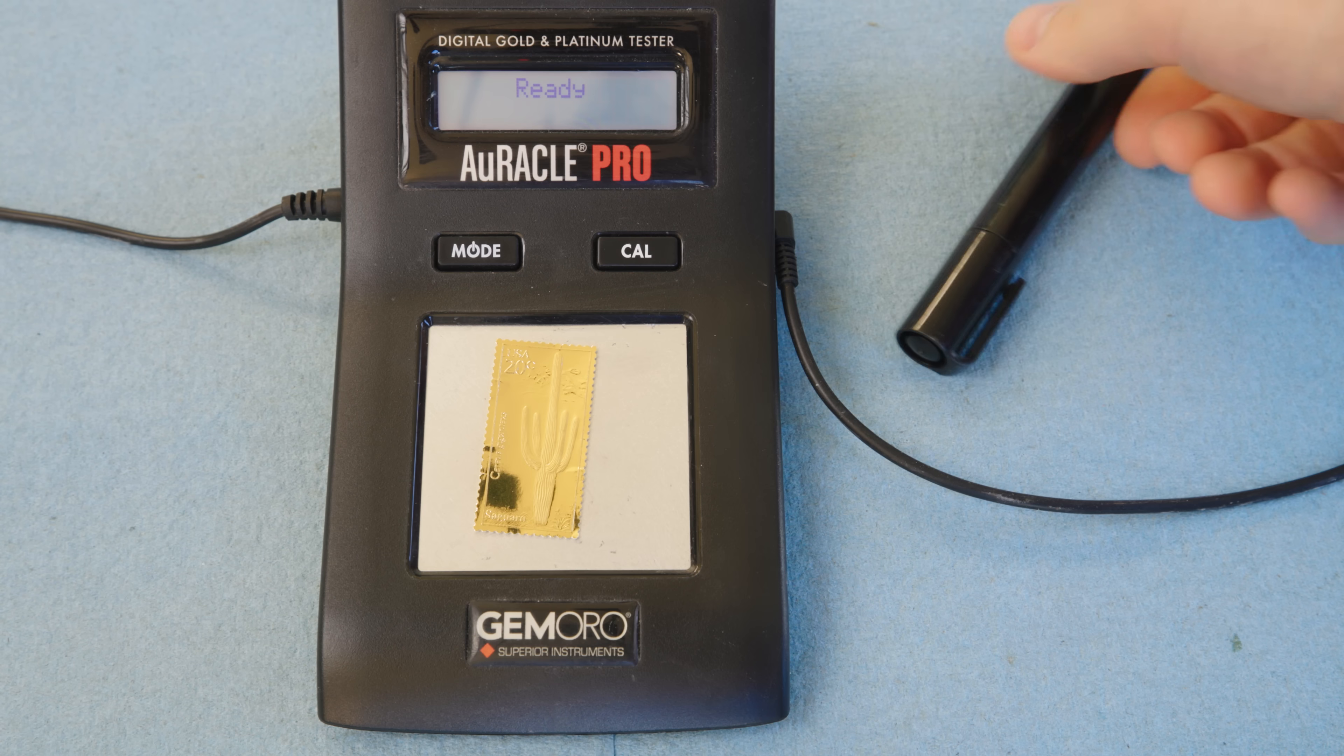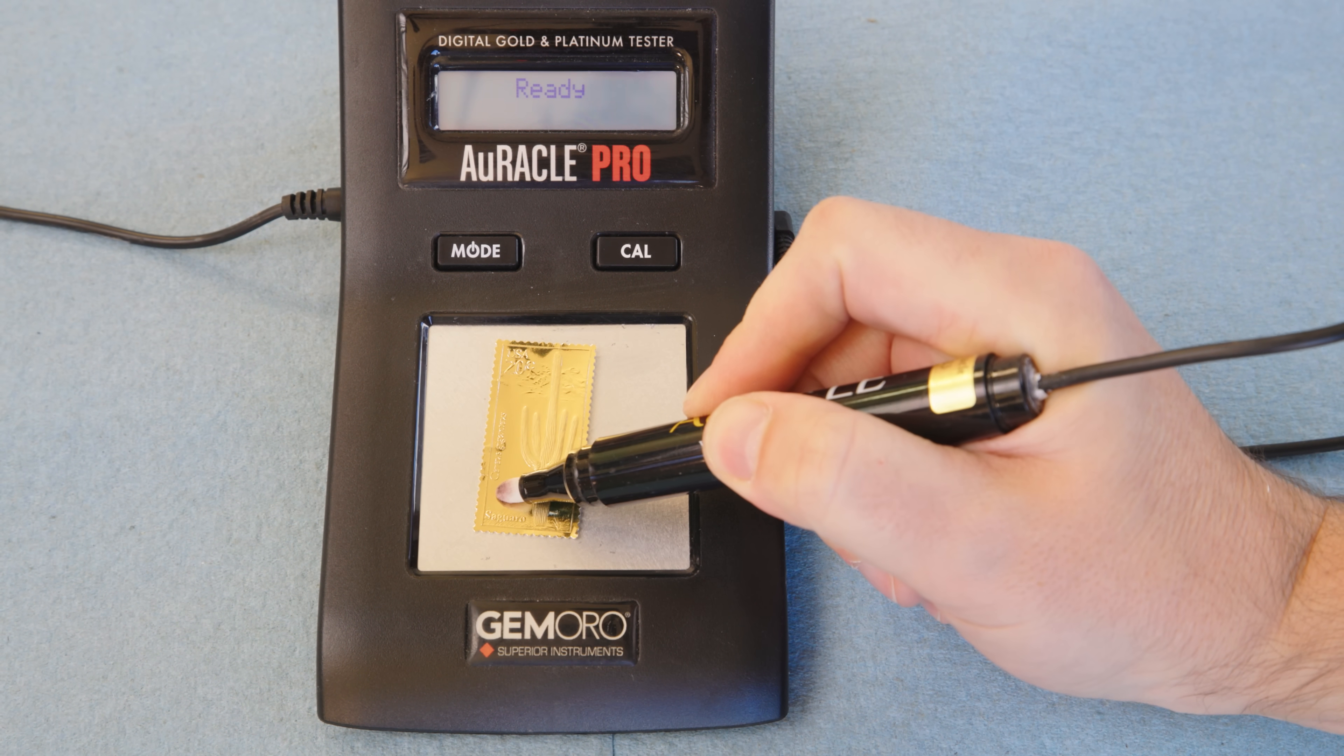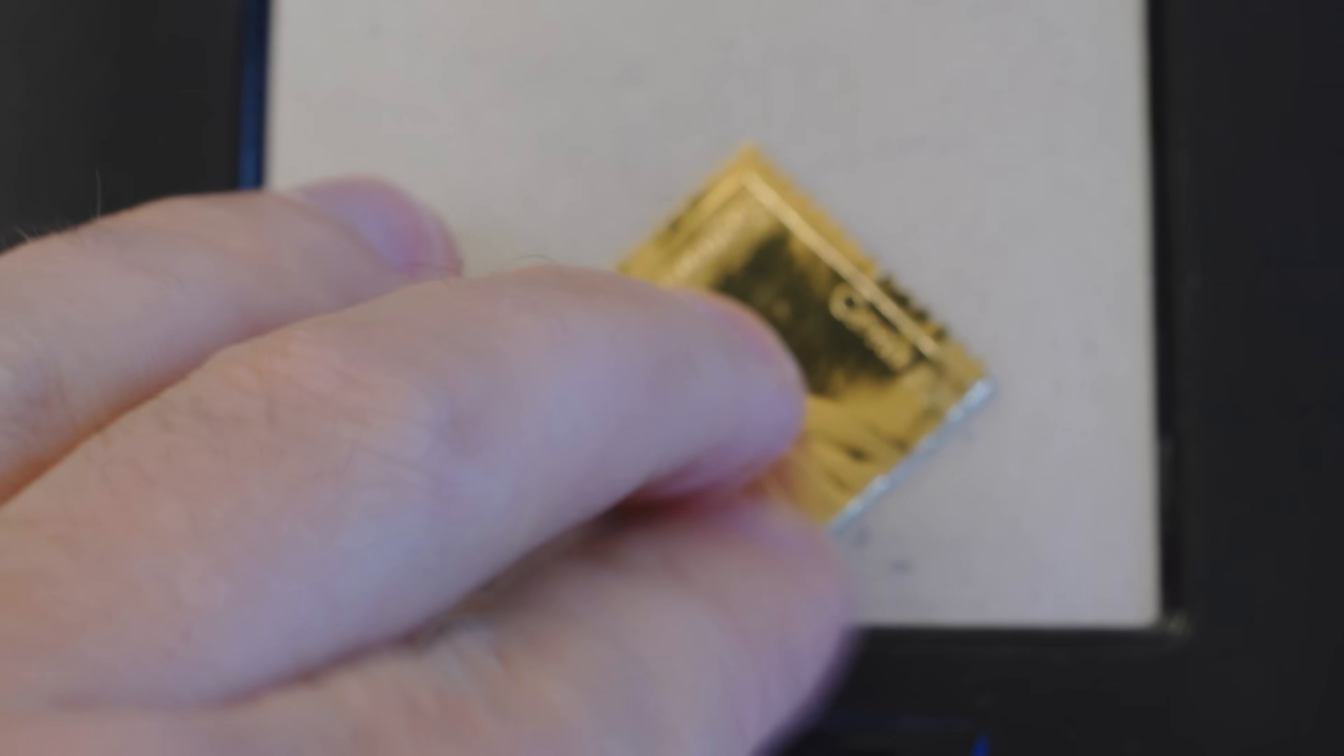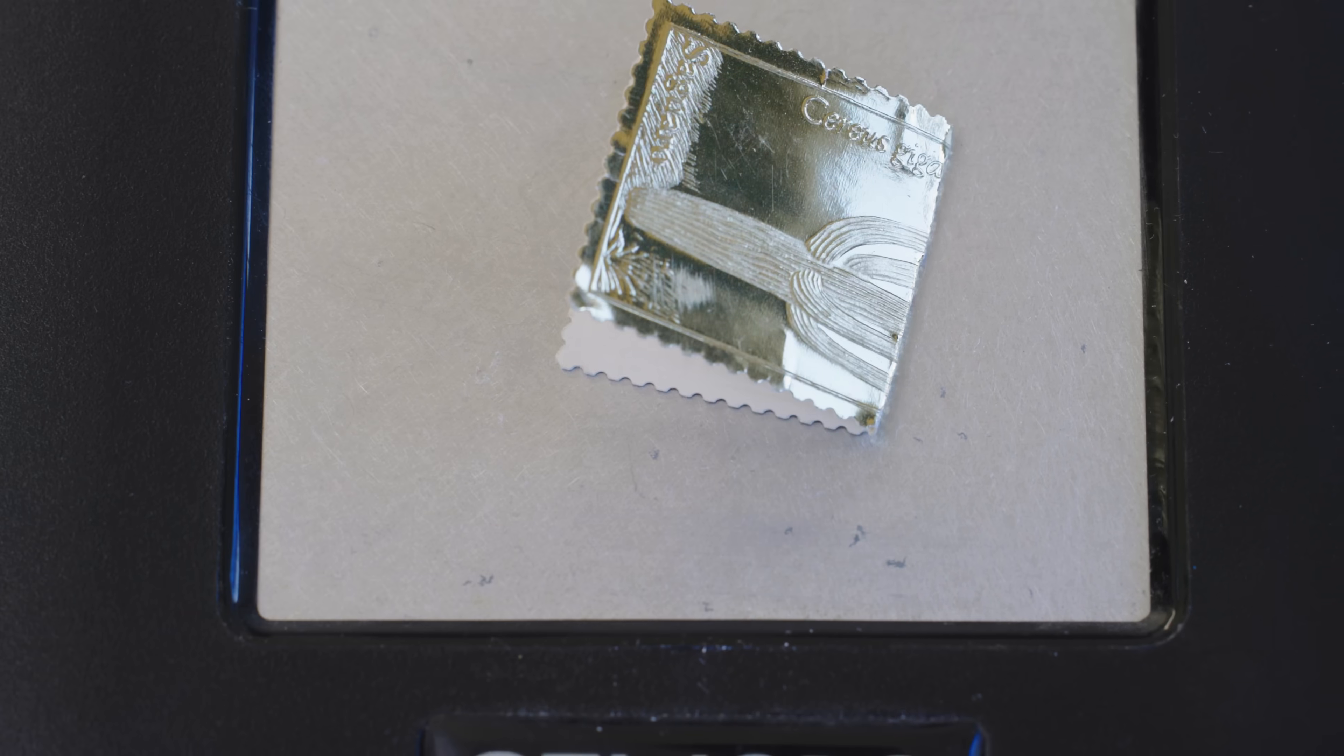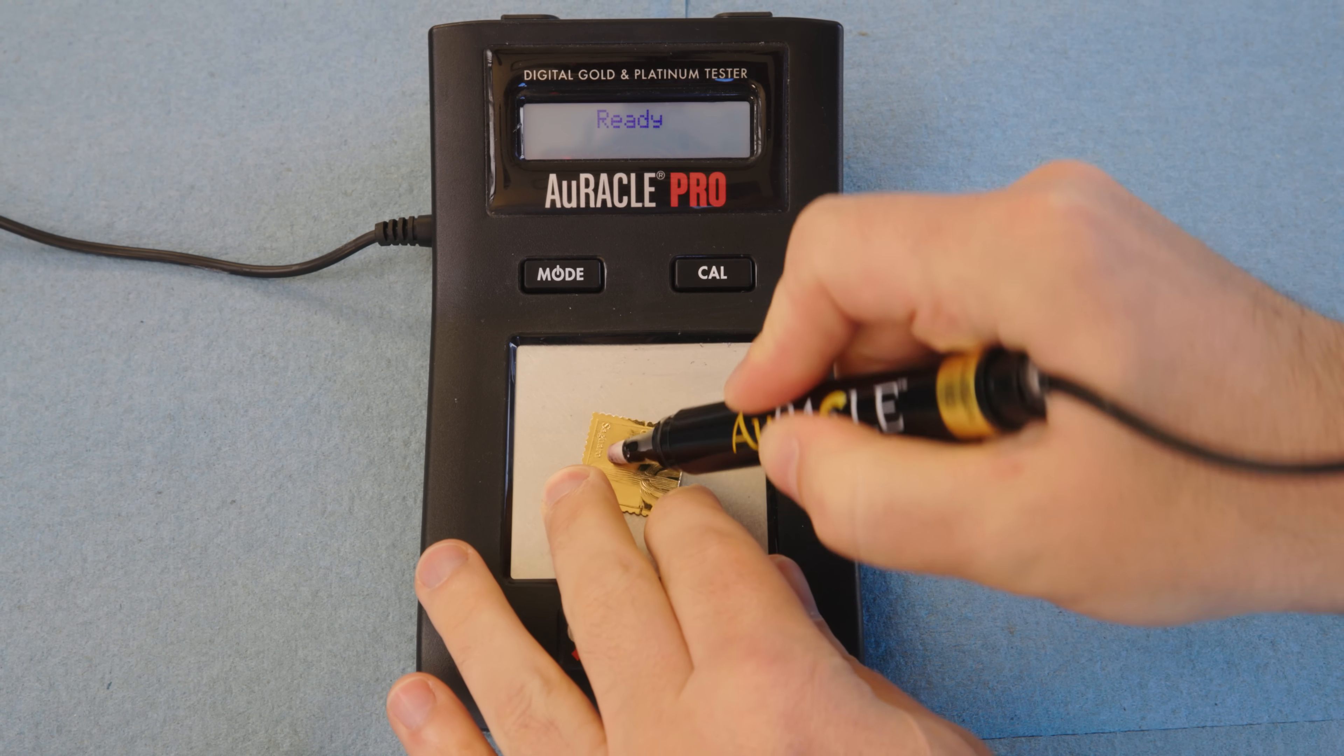So placing it down here on the metal plate and then applying the pen. Yeah just as I suspected, there's absolutely no way this is going to test. Even folding it in half so there's technically gold on the bottom and on the top, I'm still not getting any sort of reading.